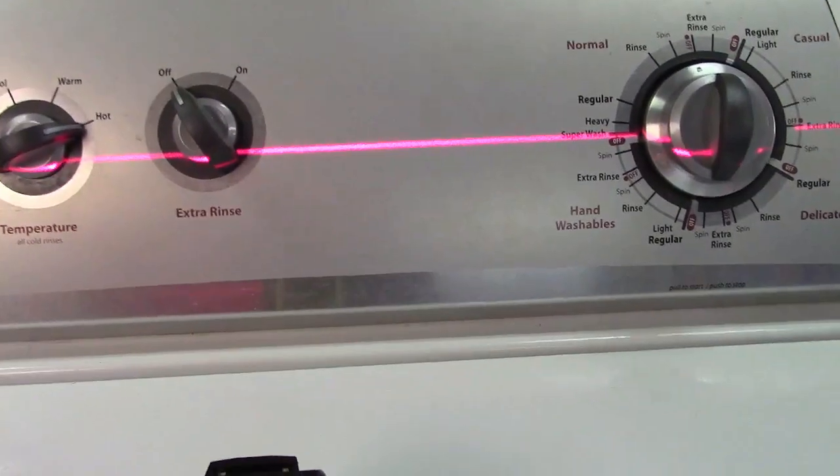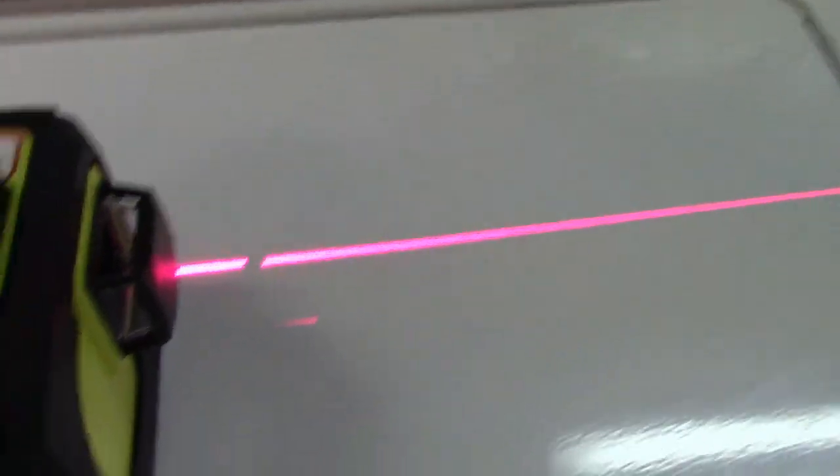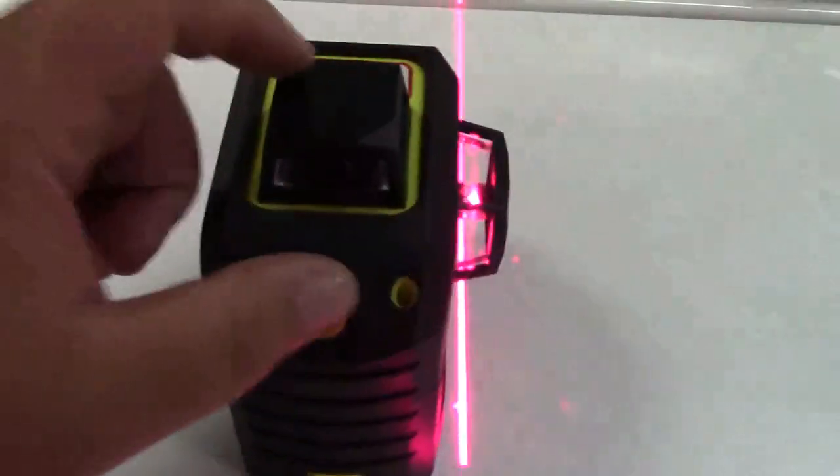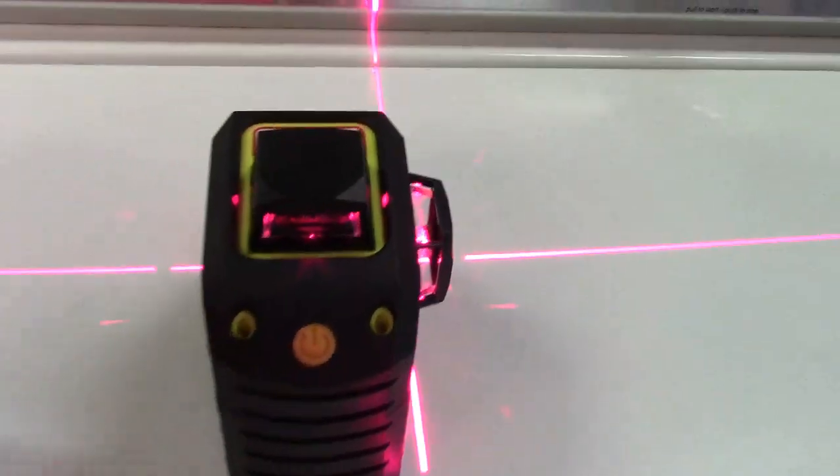You get one line, which is this one right here. You can press again, you'll get the back one, which produces a line there. And again, that'll give you the side. And then it turns on the back one, and then the top one.